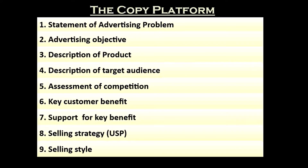Six: the key customer benefit — the most distinctive benefit that a company's product offers to the target audience. Seven: support for the key benefit — an explanation of how the key benefit works. Eight: the selling strategy — a unique benefit provided by a company which makes it different from the competitors.